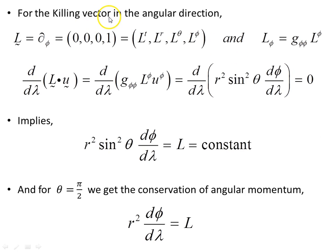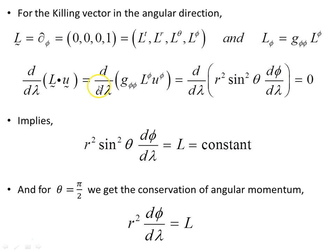The other Killing vector we mentioned earlier, in the angular direction phi — here it is, an upper index object — and we can lower its upper index from contravariant to covariant components. Then d/dλ of that equals zero, as the condition specifies.